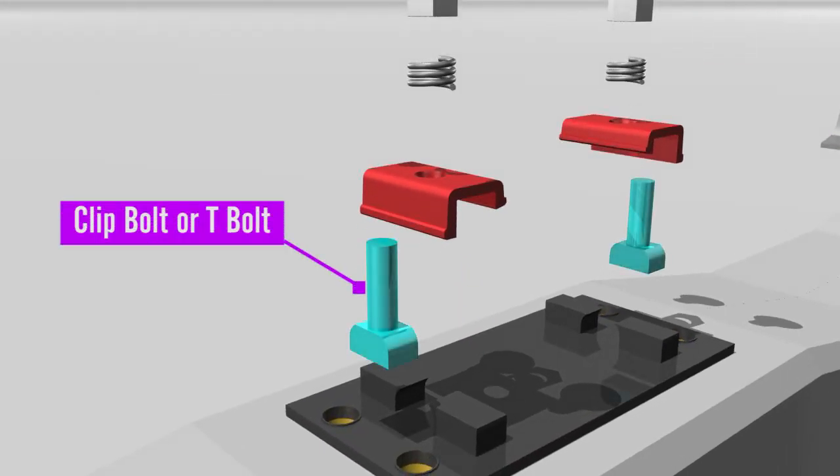Clip bolt or T-bolt. Rail bolt is also called hook bolt. It is used for the fastening of a tie plate.